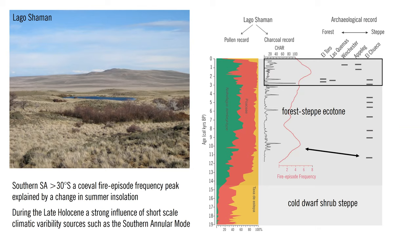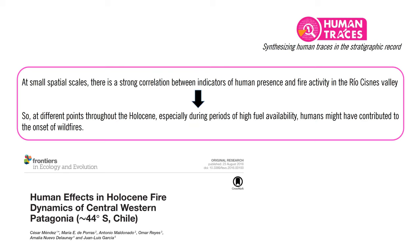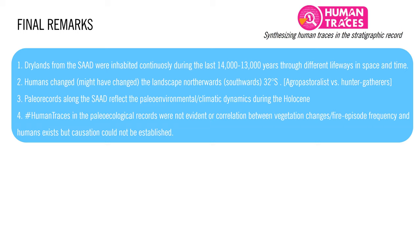This means that both peaks in fire episode frequency could be related to either human activity or climate change. Considering the aims of the Human Traces Working Group, at small spatial scales, there is a strong correlation between indicators of human presence and fire activity in the Río Cisnes Valley in Patagonia. At different points throughout the Holocene, especially during periods of high fuel availability, humans may have contributed to the onset of wildfires.